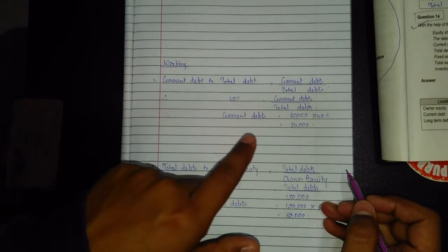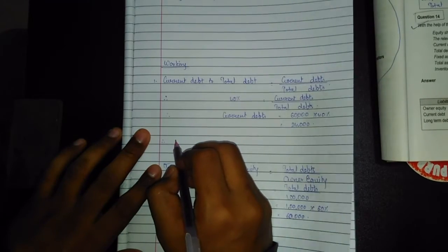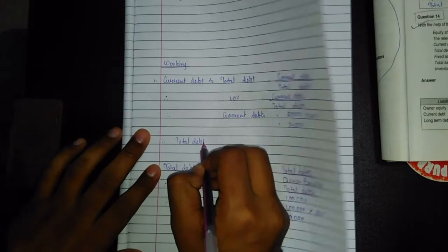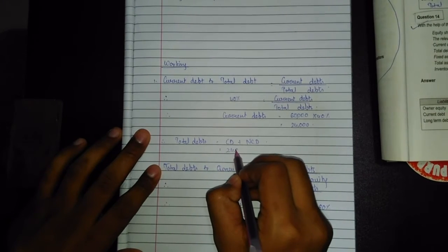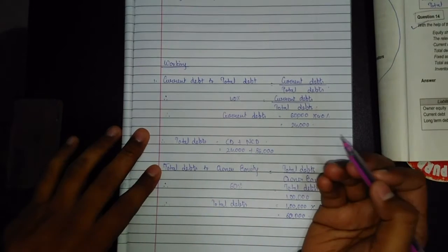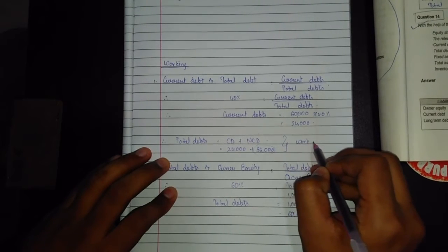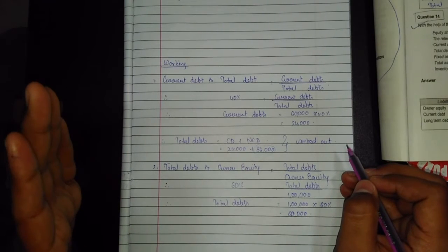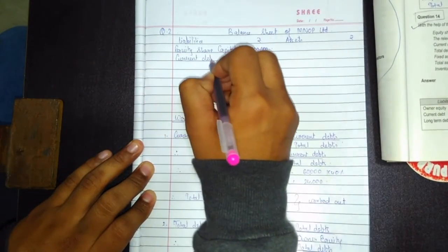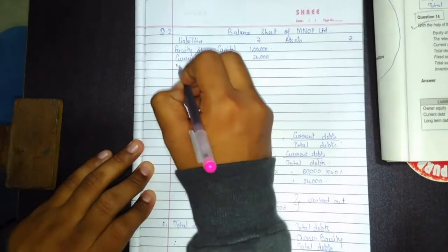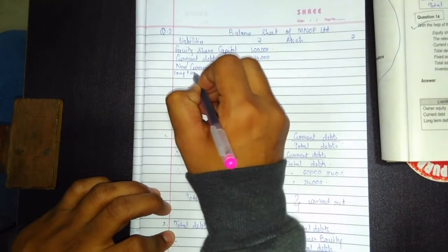Out of the total debt of 60,000, current debt is 24,000 and non-current (long-term) debt is 36,000. So total debt = current debt (CD) + non-current debt (NCD) = 24,000 + 36,000. We'll write this on the liability side of the balance sheet: current debt = 24,000 and long-term debt = 36,000.